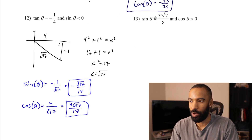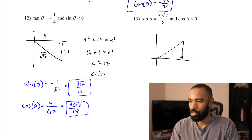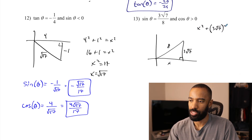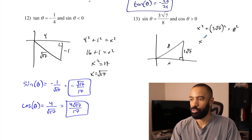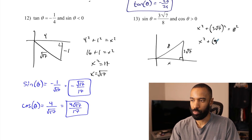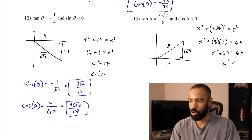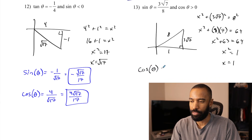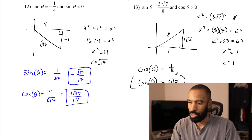Problem 13: sine of theta is 3 root 7 over 8, cosine is positive — first quadrant. Opposite is 3 root 7, hypotenuse is 8. Pythagorean theorem: x² + (3√7)² = 8², and (3√7)² = 9 × 7 = 63, so x² = 64 − 63 = 1, meaning x = 1. Cosine of theta is 1/8. Tangent of theta is 3 root 7 over 1, which is just 3 root 7.